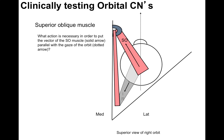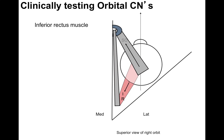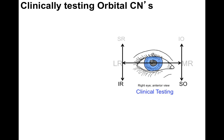The superior oblique muscle is highlighted in pink and the inferior rectus is grayed out. What action is necessary in order to put the vector of the superior oblique muscle — that solid arrow — parallel with the gaze of the orbit — that dotted arrow? You have to adduct the eye; now they're in parallel. Then you have the patient look down. The superior oblique is isolated from the inferior rectus by adducting the eye first, and the inferior rectus is isolated from the superior oblique by abducting the eye first.